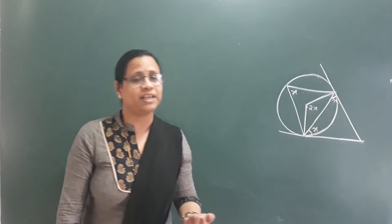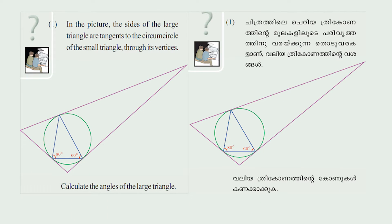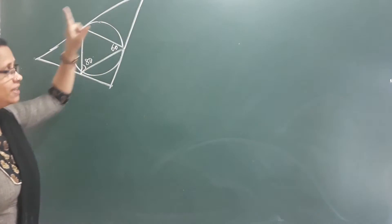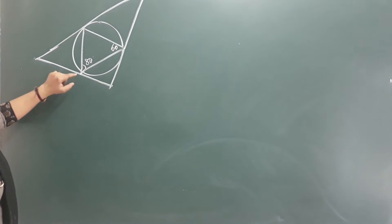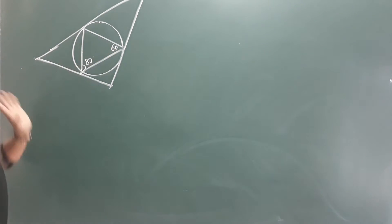Now let's talk about problems on page 172. First question: In the picture, the sides of the large triangle are tangents to the circumcircle of the small triangle through its vertices. Calculate the angles of the large triangle. In this small triangle, 80 and 60 are the two angles.